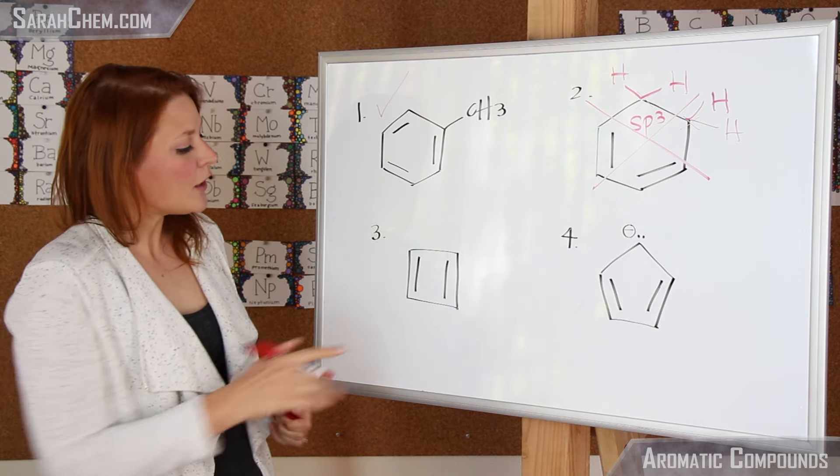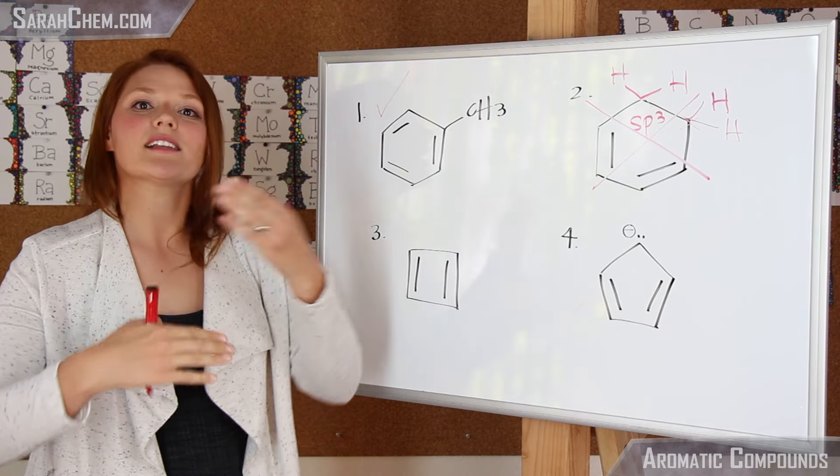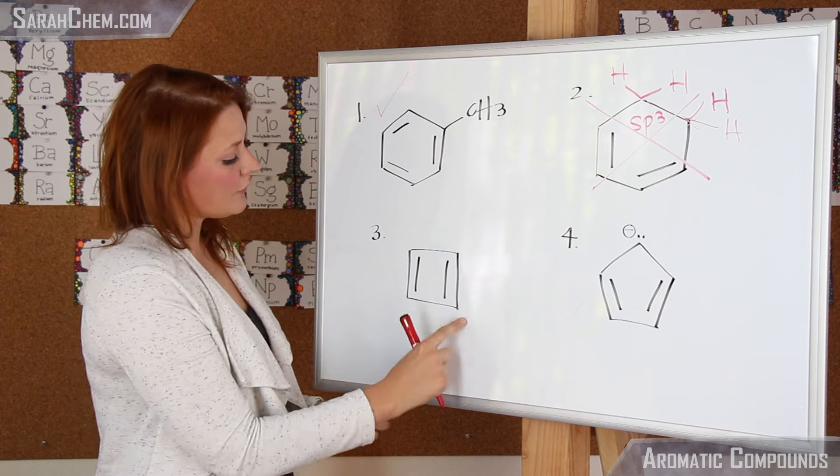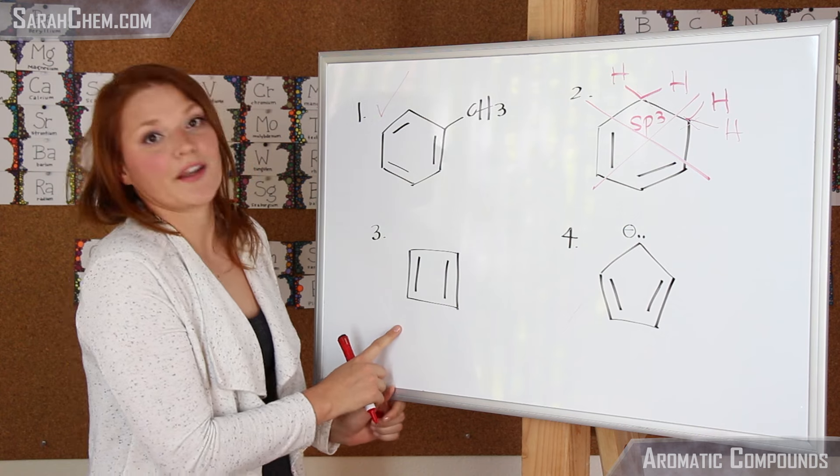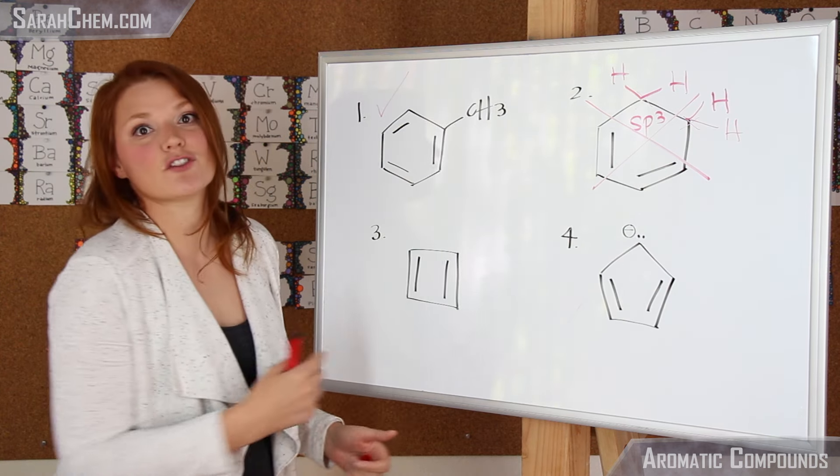Let's try again on the third one. Here, cyclic it is—it may look like a square, but that's still a cyclic compound. The second criteria, planar: all of these carbons are sp2 hybridized, so we're doing well so far. The third criteria, an odd number of pi cloud electrons. In this case, we actually have two.